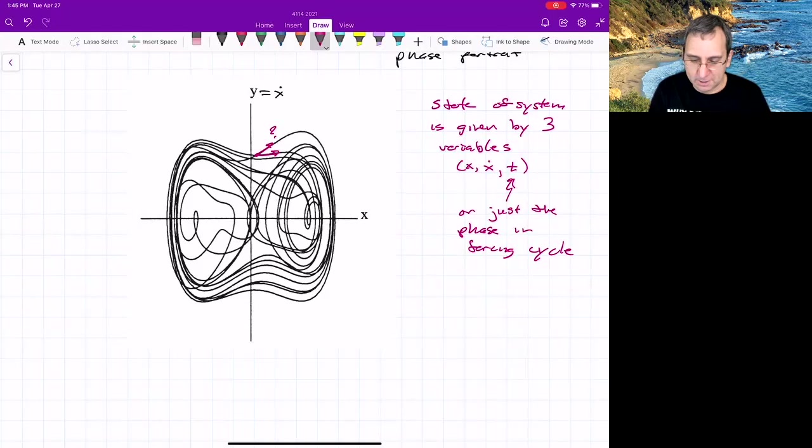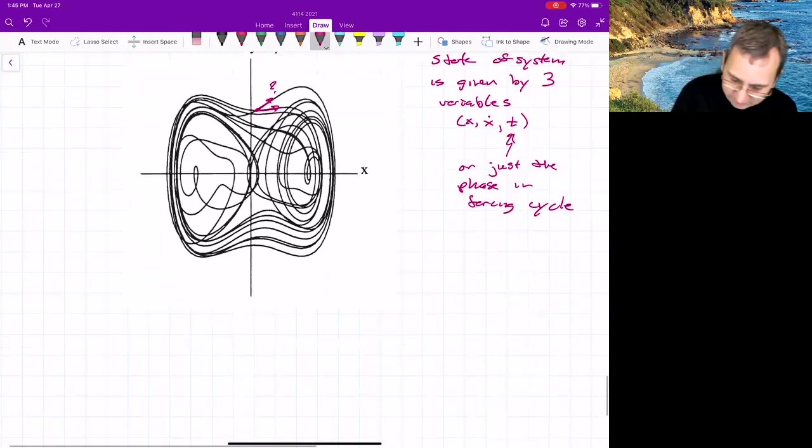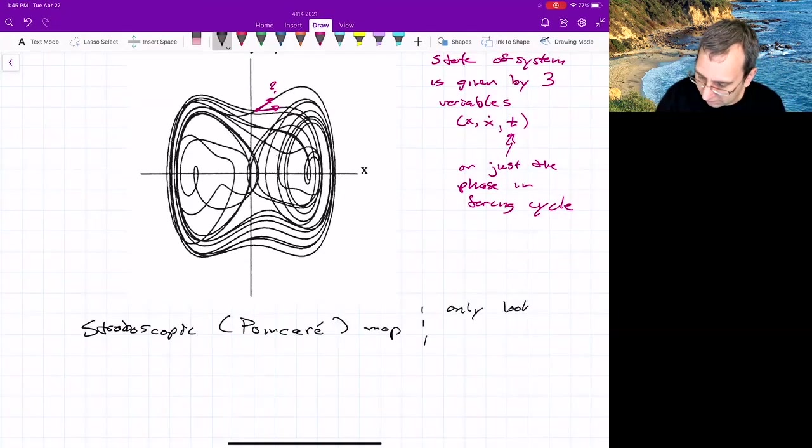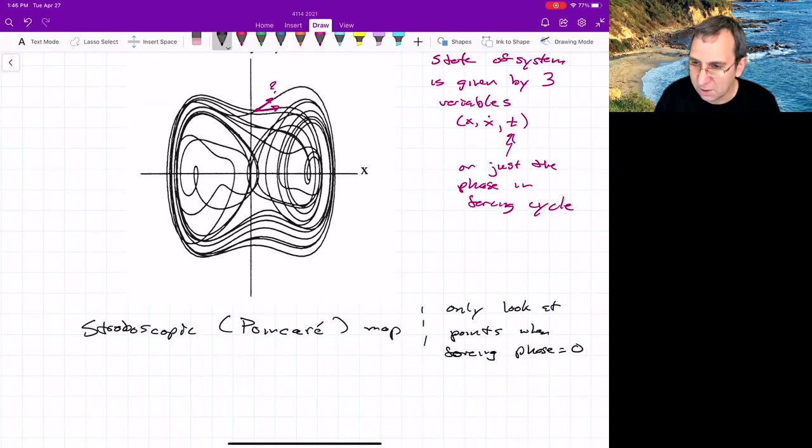You take initial condition and then look at it only at phase zero. That would be called a stroboscopic map or Poincare map or a stroboscopic Poincare map, because it's like you're strobing. Only look at points when forcing is at phase zero, which in what we're talking about here, this would be whenever T is divisible by two pi because of how we chose omega.